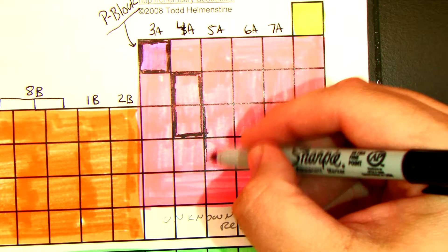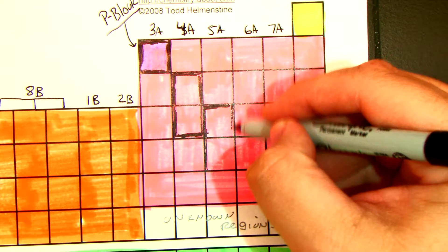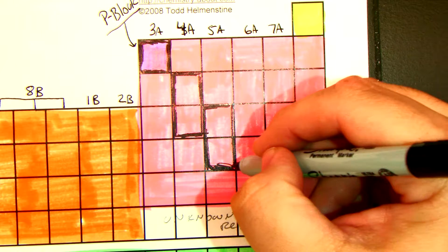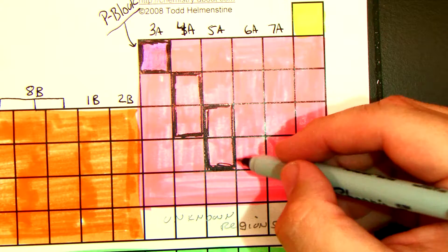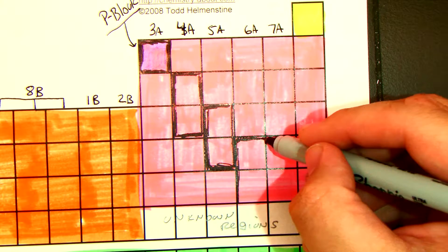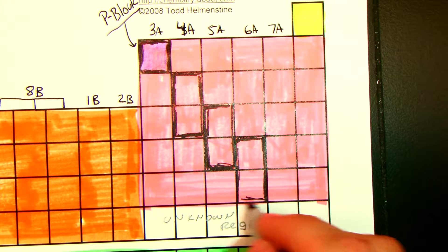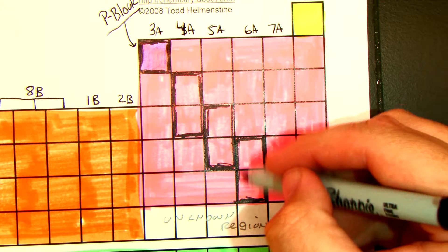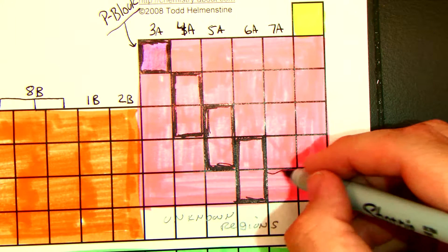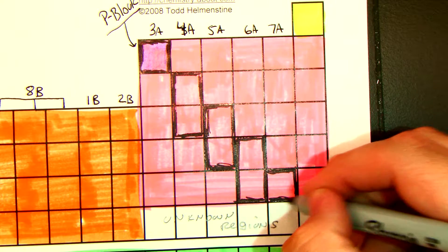The metalloids kind of go by twos. The next group in 5A is the next step down — it's one step down and two elements. Then in 6A, it's the last two in the P-block. And then there's one more: in group 7A, it's the last one in the P-block before you get to the unknown regions. These are all your metalloids.